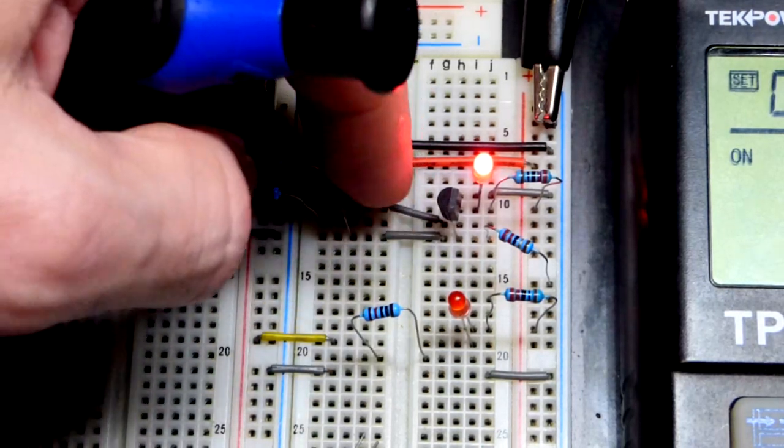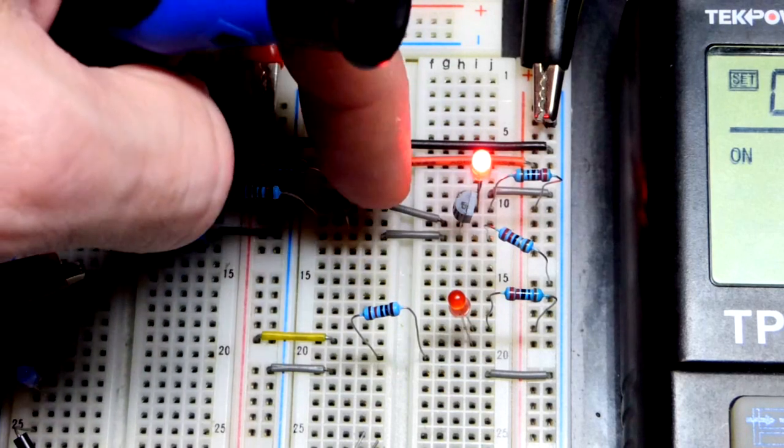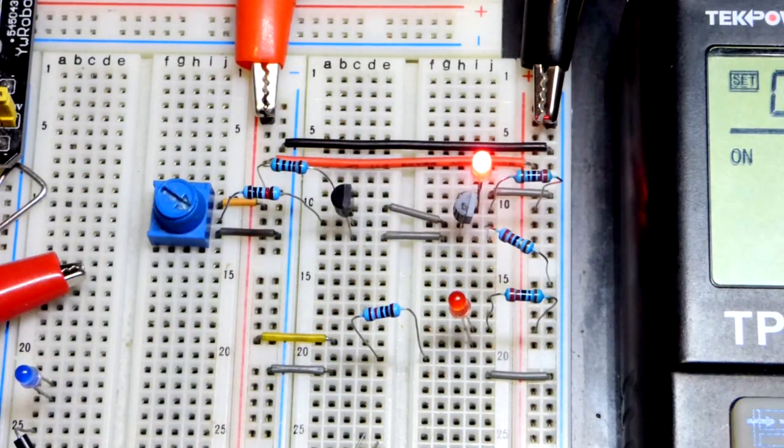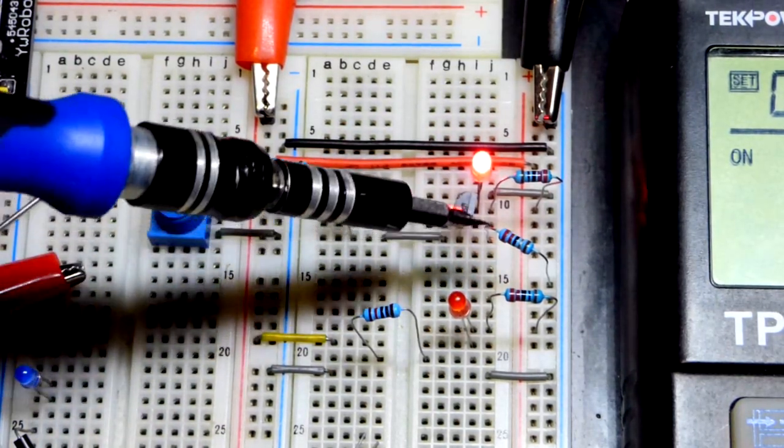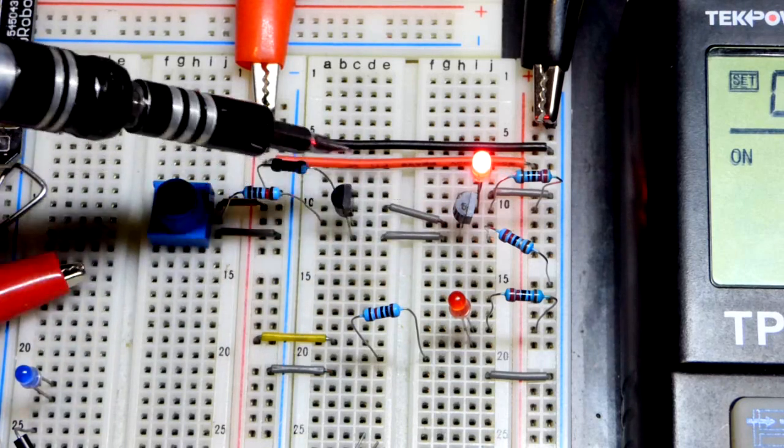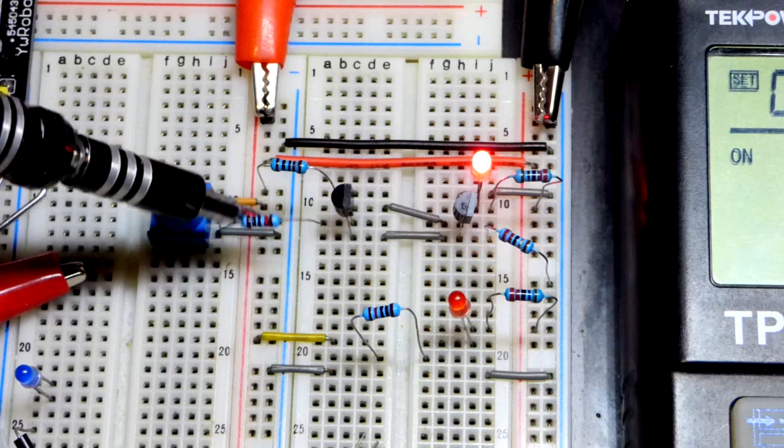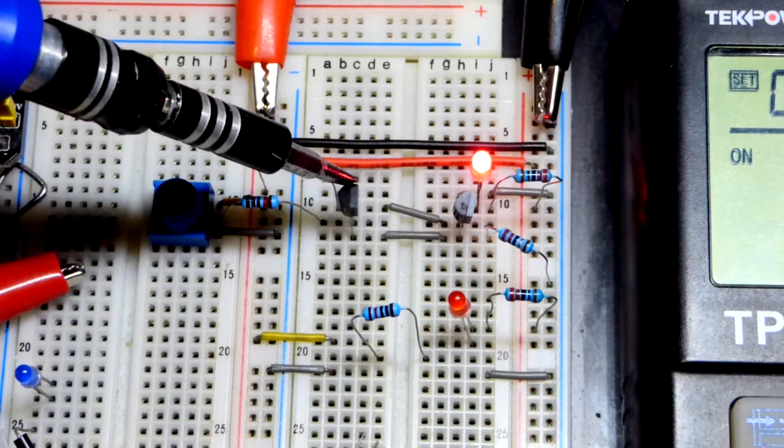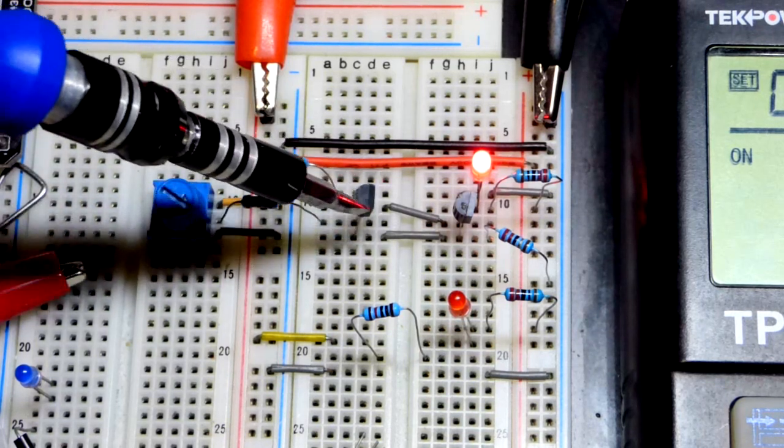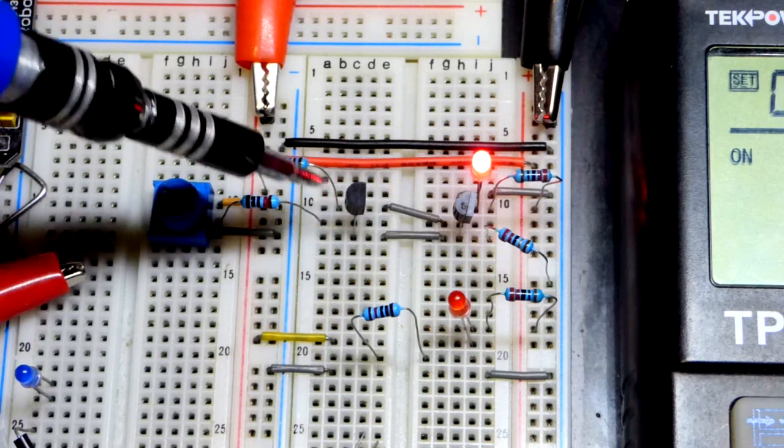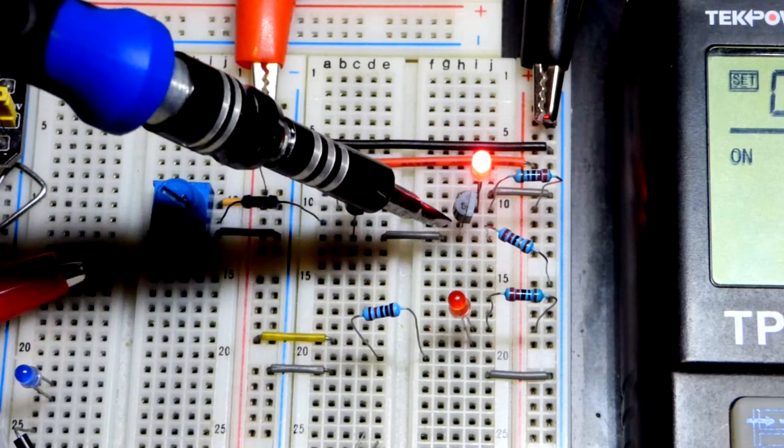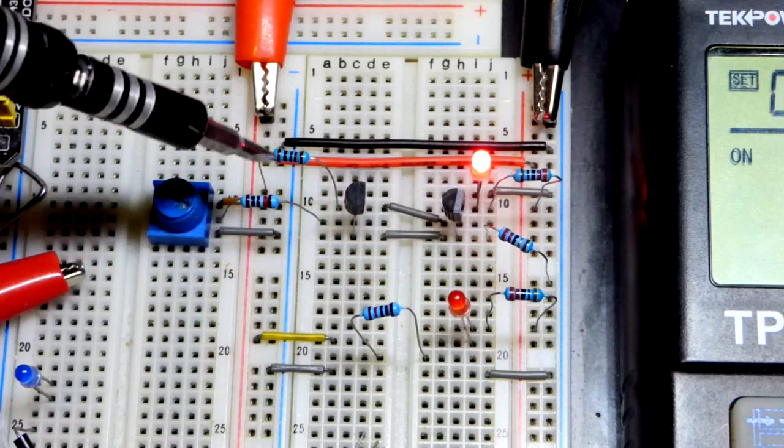So we'll zoom in a little bit. We got two NPN bipolar junction transistors, flat side for both of them is to the right. So the emitter is at the bottom, base is in the middle, and collector on top. I got a 1000 ohm resistor coming from the positive supply right there to the collector of that transistor right there.